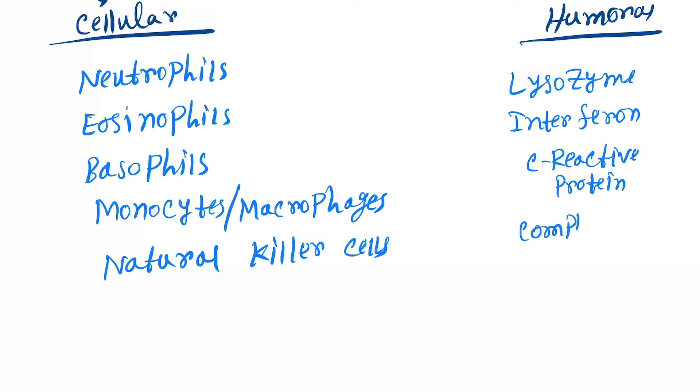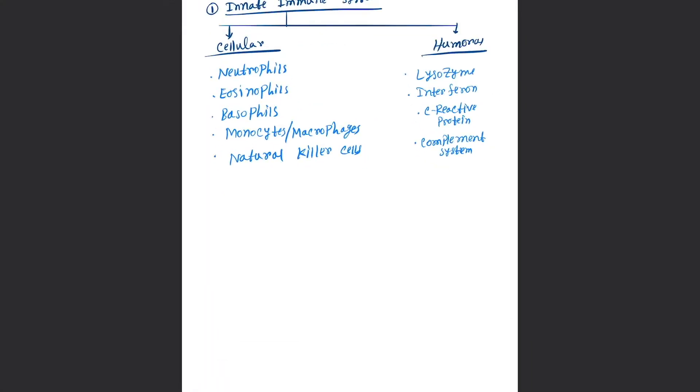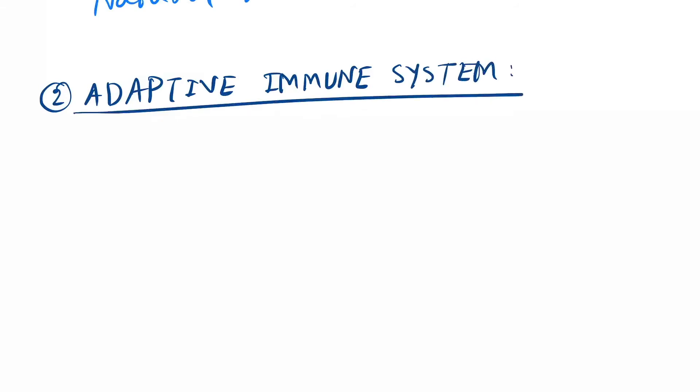And the complement system. Now come to the adaptive immune system, the components of the adaptive immune system. Here also works by two mechanisms: first one is cellular and another one is humoral.